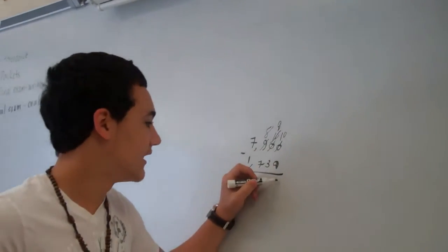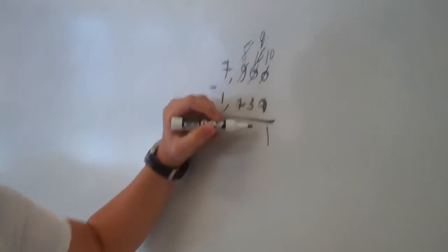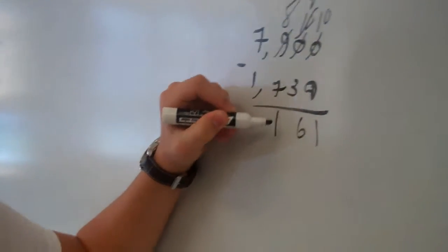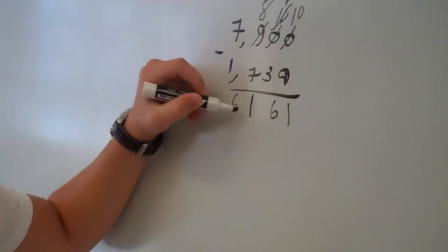So, 10 minus 9 equals 1, 9 minus 3 equals 6, 8 minus 7 equals 1, and 7 minus 1 equals 6. My final answer is 6,161.